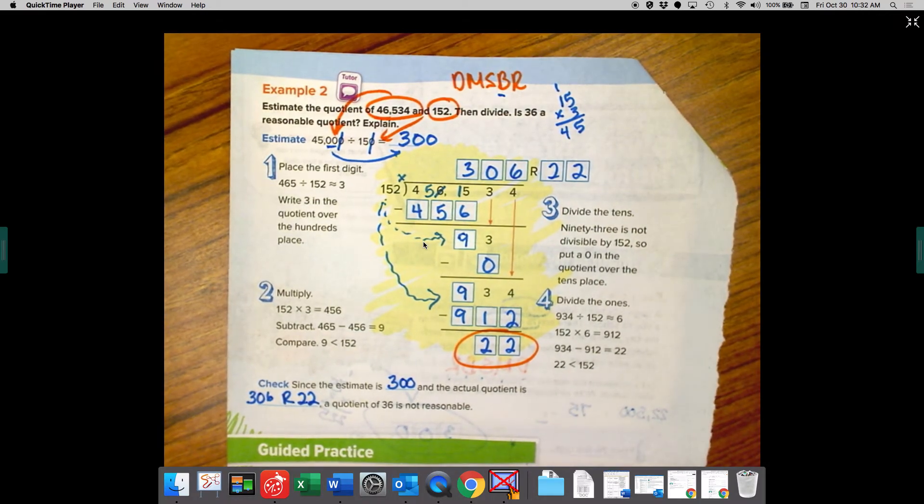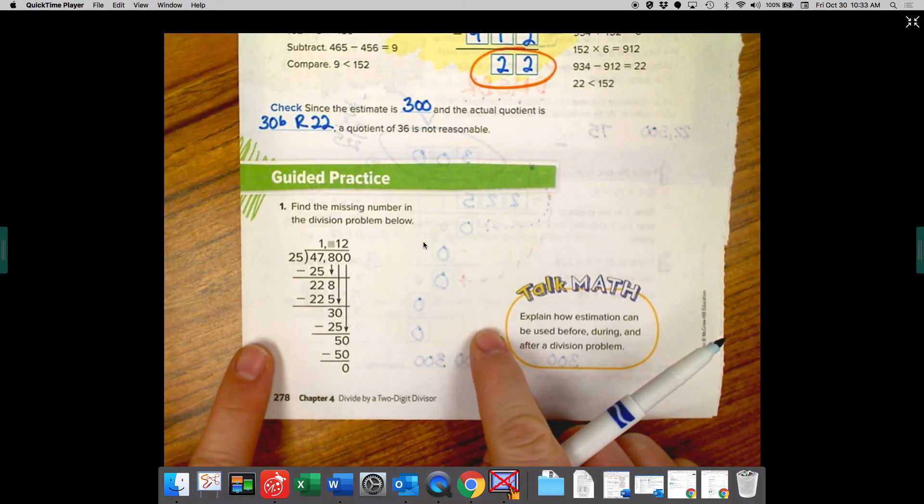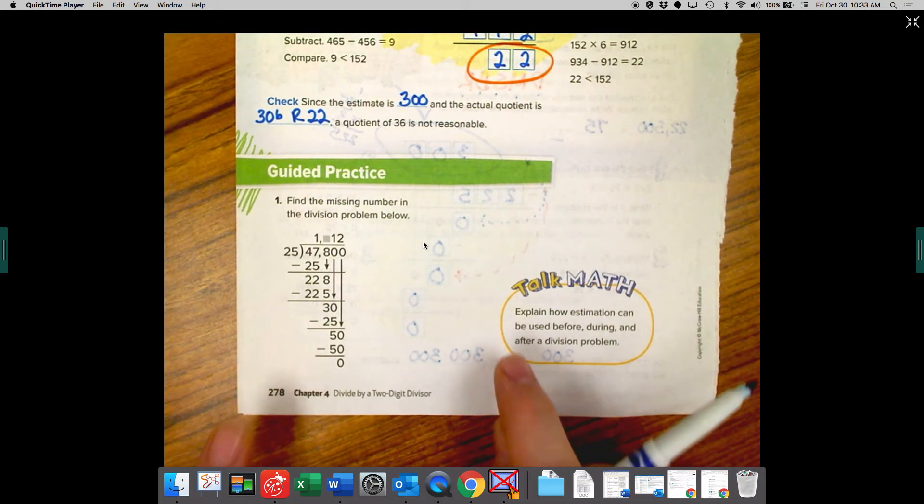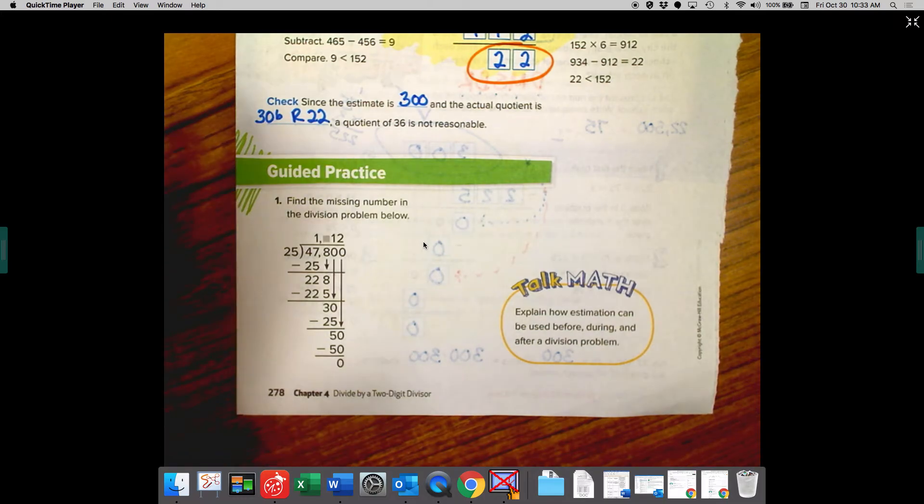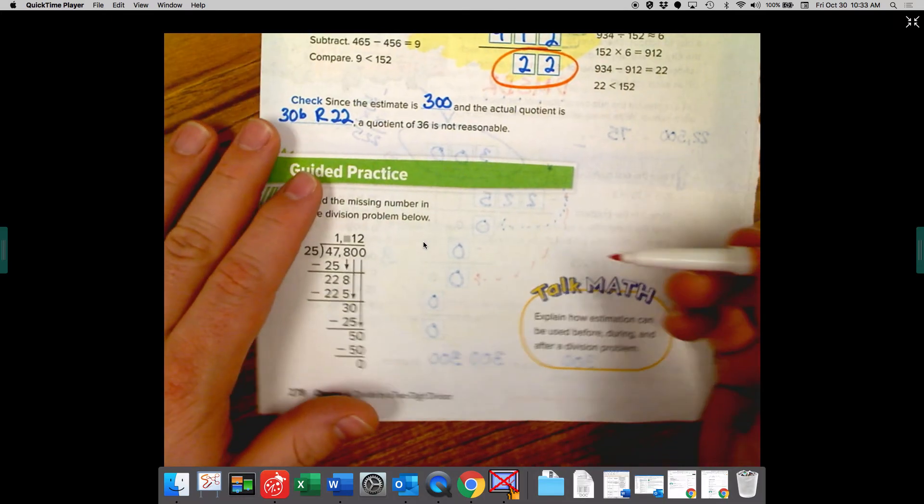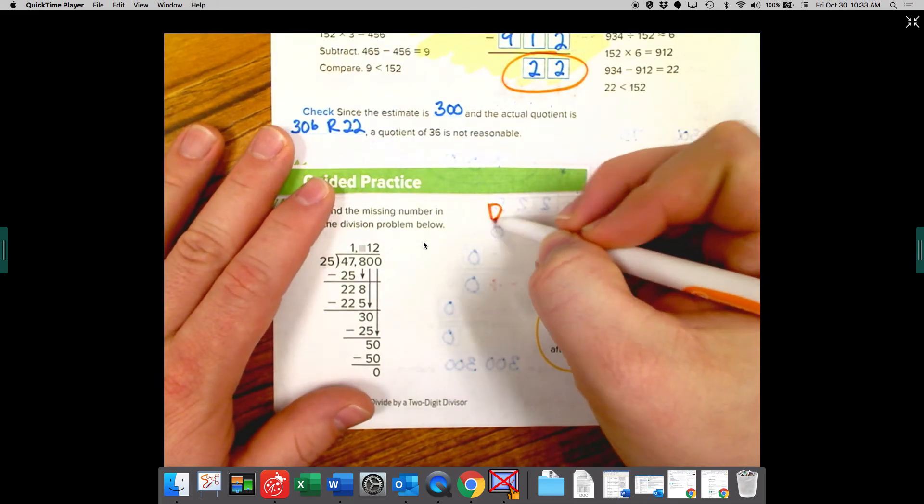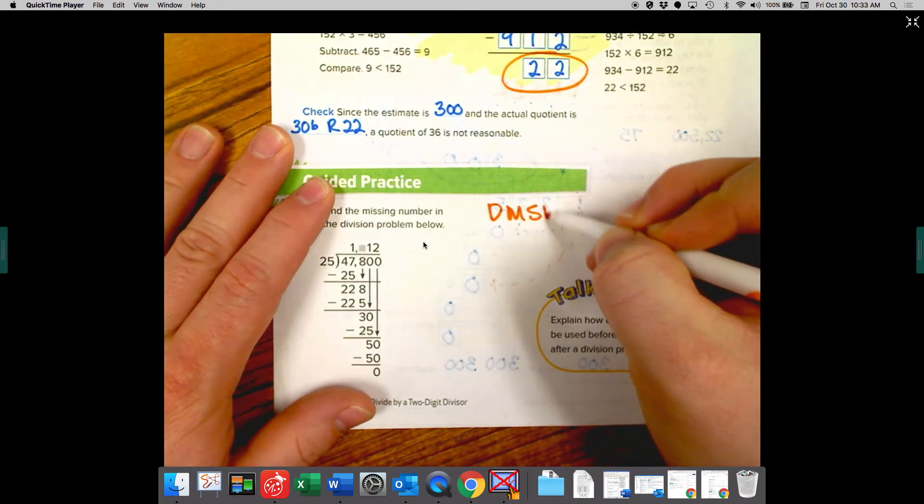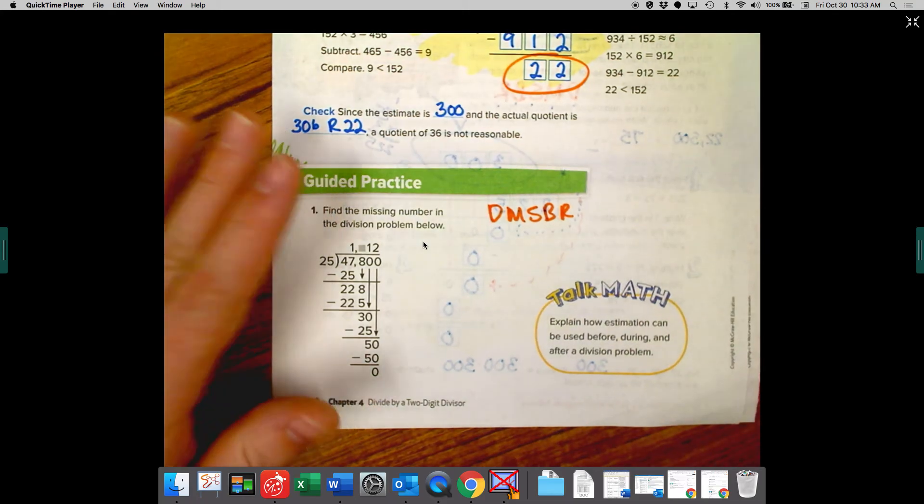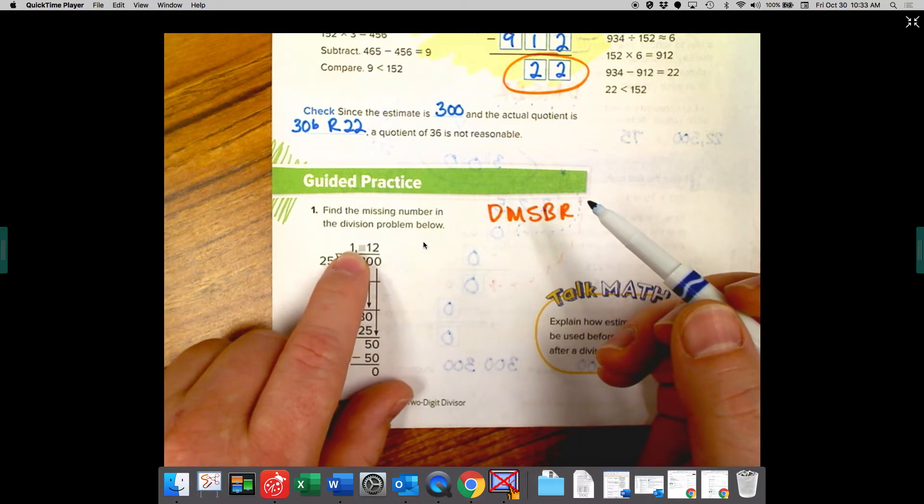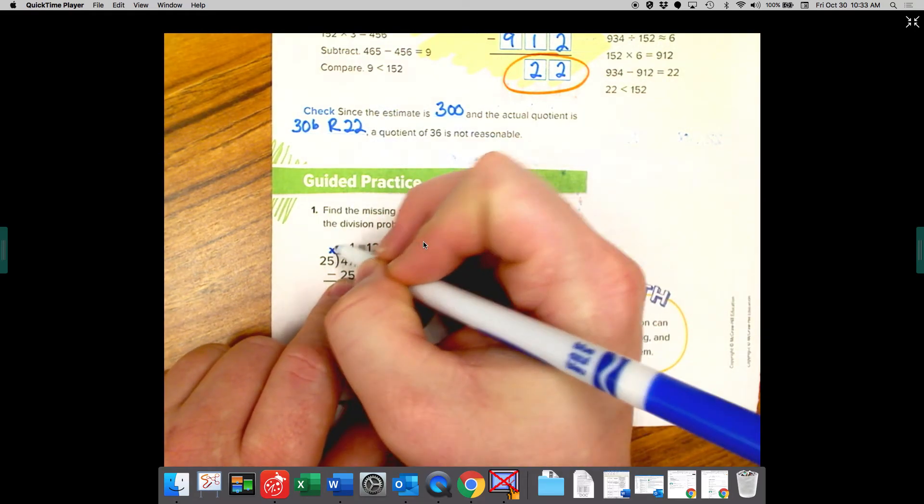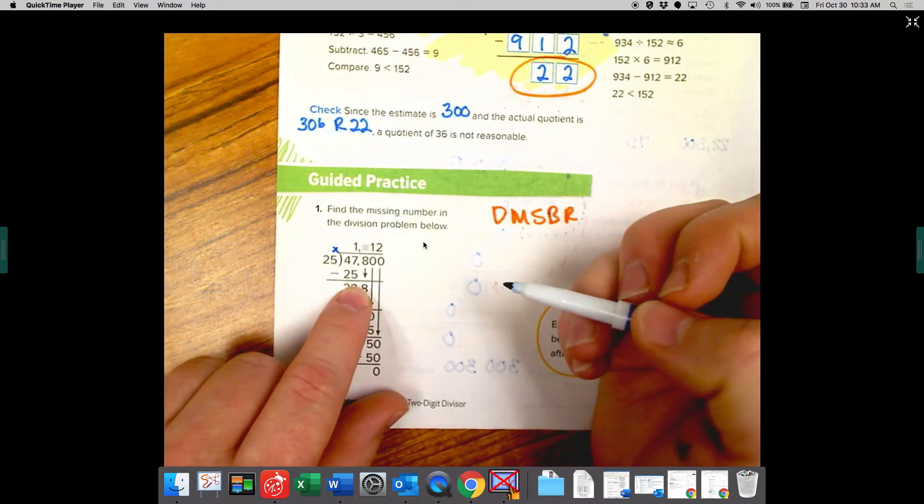So let's take a look at down at the bottom here, guided practice. So they want us to find the missing number in the division problem below. Well, we know all the steps. We've been practicing them. We know that we need to know, does McDonald's sell burgers raw? Let's make sure they did the steps. So they said 25 goes into 47 one time. I'll put my little multiplication. So 25 times one minus 25. Yep.